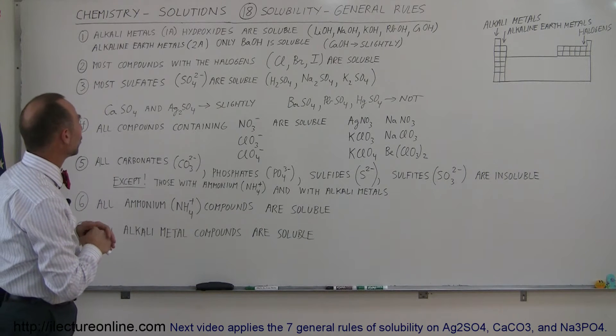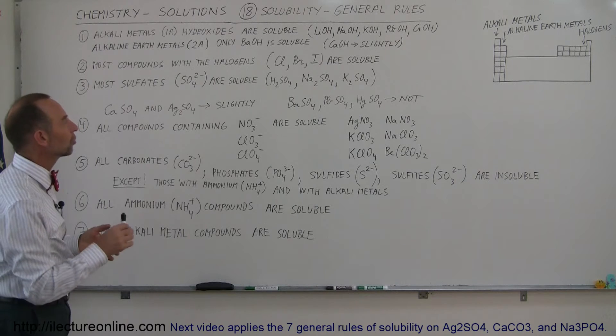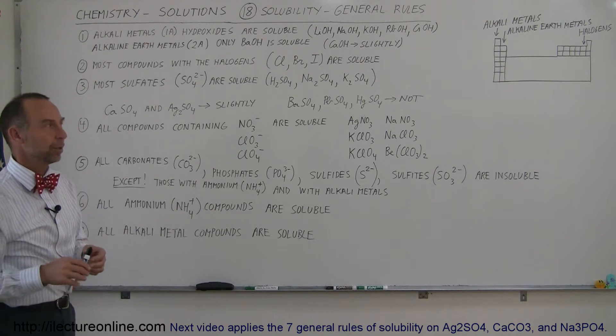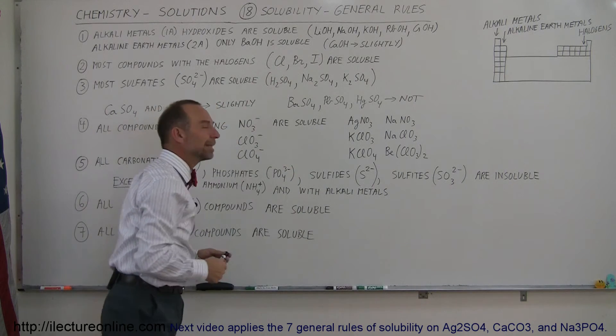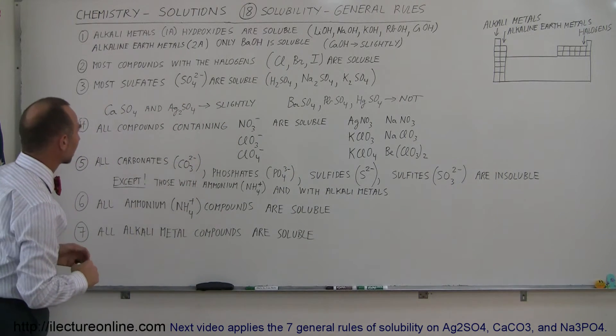Alright, the next one. Most compounds with the halogens, chlorine, bromine, and iodine, are soluble. So, when we go over to the halogens, if there's a compound with any one of these three, chances are those are soluble.